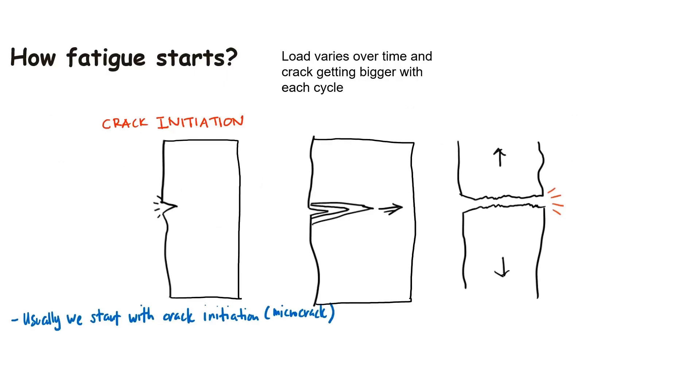So usually we start with some kind of crack initiation. For example, in the figure here, we have this tiny micro-crack that can be due to the way the part was fabricated or the way the material was arranged and so on. And at some point, we need to decide for this crack to grow, and as our load varies over time, that crack is going to get bigger and bigger with each cycle. And eventually, this will proceed to brittle-style fracture, and this could even happen even if that material is ductile material. So something like aluminum could suddenly fail without the warning that is typical for ductile material, such as a lot of deformation that will happen before failure.